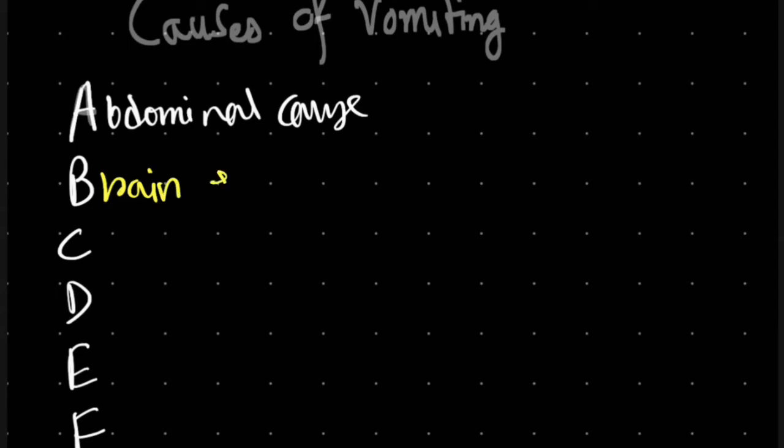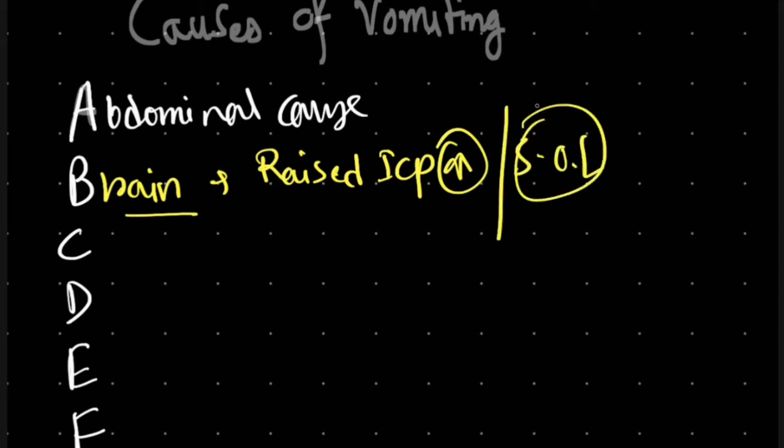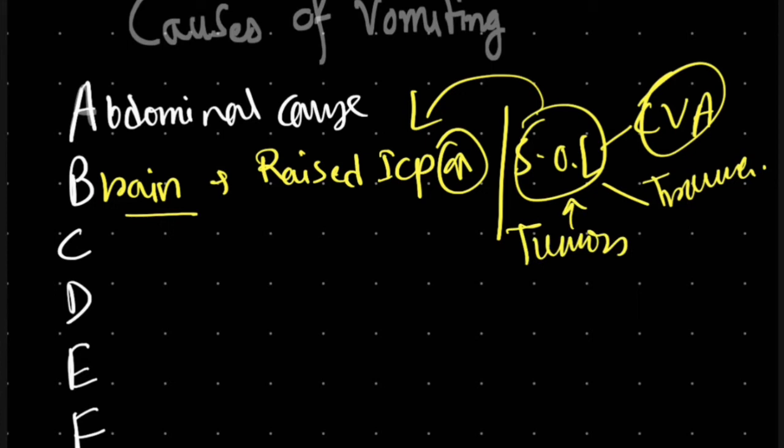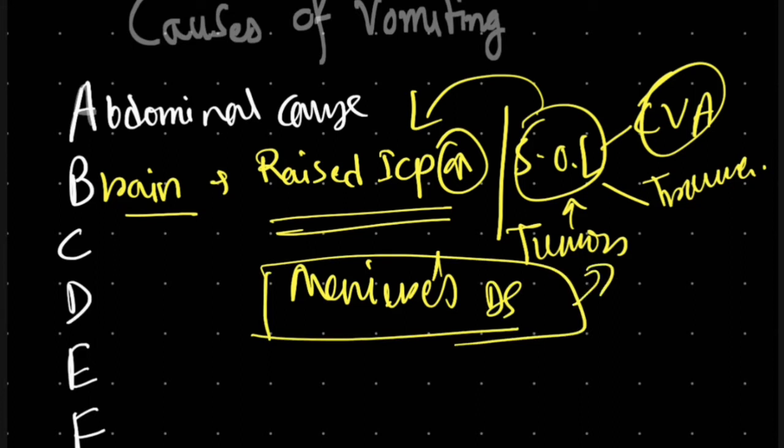Next, B is for brain-related causes. Raised intracranial pressure can lead to vomiting. Space-occupying lesions, sudden cerebrovascular accidents, or trauma causing intracranial bleeding all increase intracranial pressure and cause vomiting. Tumors can similarly cause raised intracranial pressure. Meniere's disease can also cause vomiting, and meningitis is another condition that can induce vomiting.